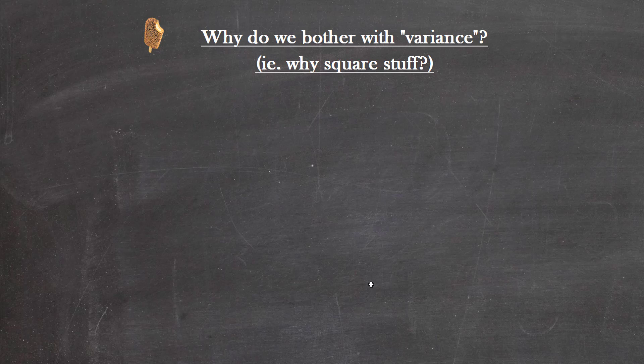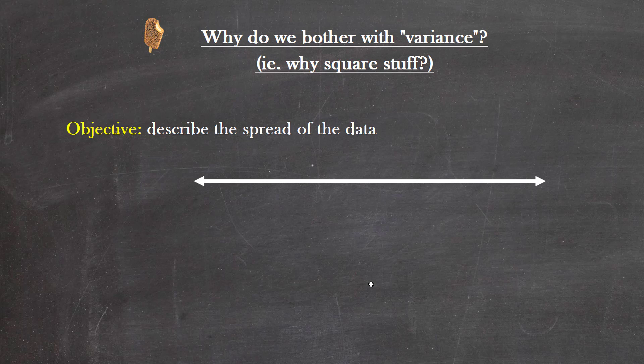First up, why we bother with the variance, i.e., why do we square stuff? To answer this question, you've got to put yourself in the position of someone trying to describe the spread of a dataset. We know that the mean describes where the data set is, the central location, but if you're trying to describe the spread or the variation in the data set, how would you do it?